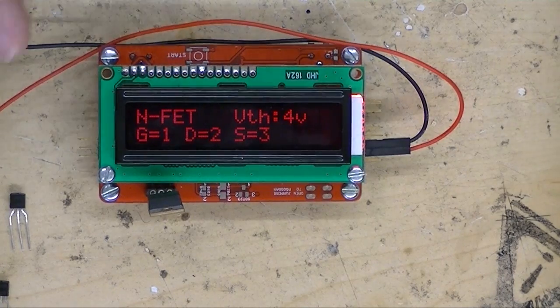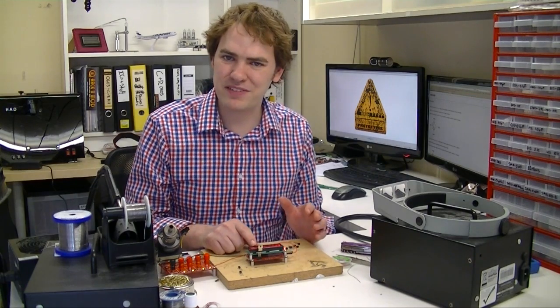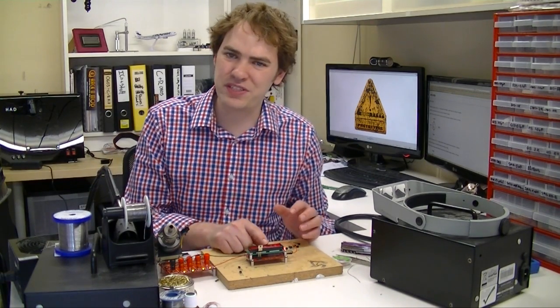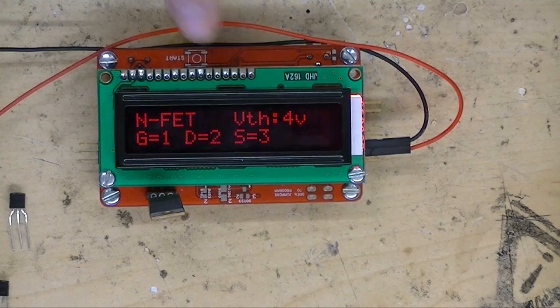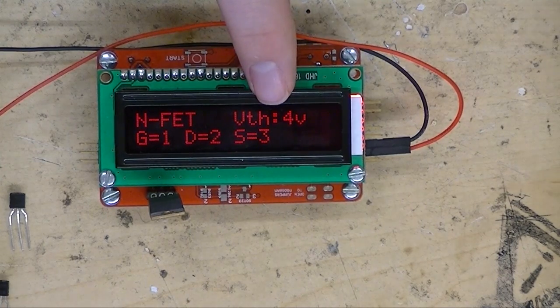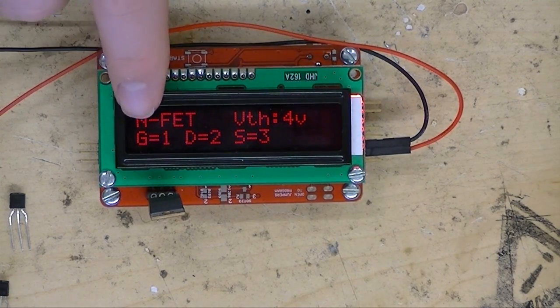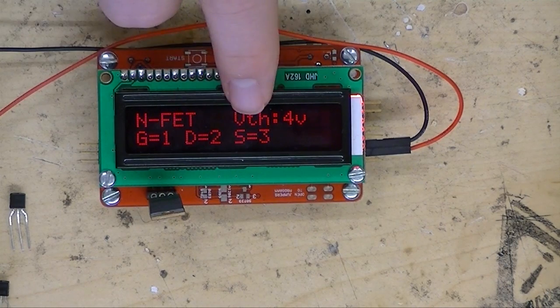This time it shows that we found an N-FET, an N-type MOSFET. It also shows the voltage at which the gate actually switches on and off. Here we're estimating about 4 volts. It also shows the pinouts for the gate, drain, and source pins.